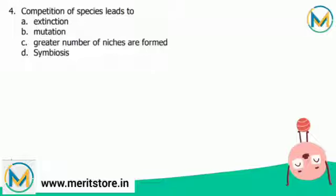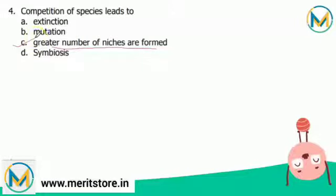Competitive exclusion may be avoided if one or both of the competing species evolve to use a different resource, occupy a different area of the habitat, or feed at different times of day. The result is that two similar species use largely non-overlapping resources and thus have different niches. Hence, competition results in a larger number of niches to prevent competitive exclusion. The correct answer is option C — greater number of niches are formed.